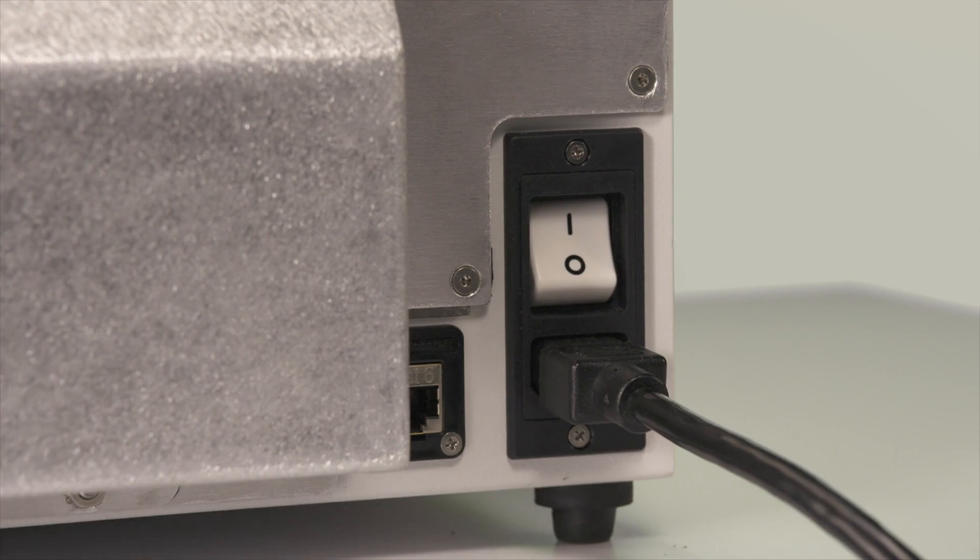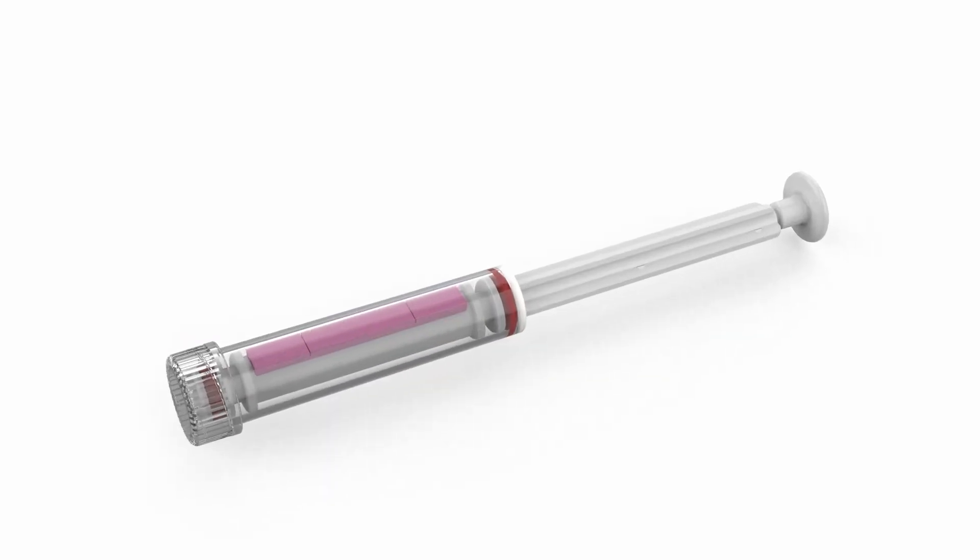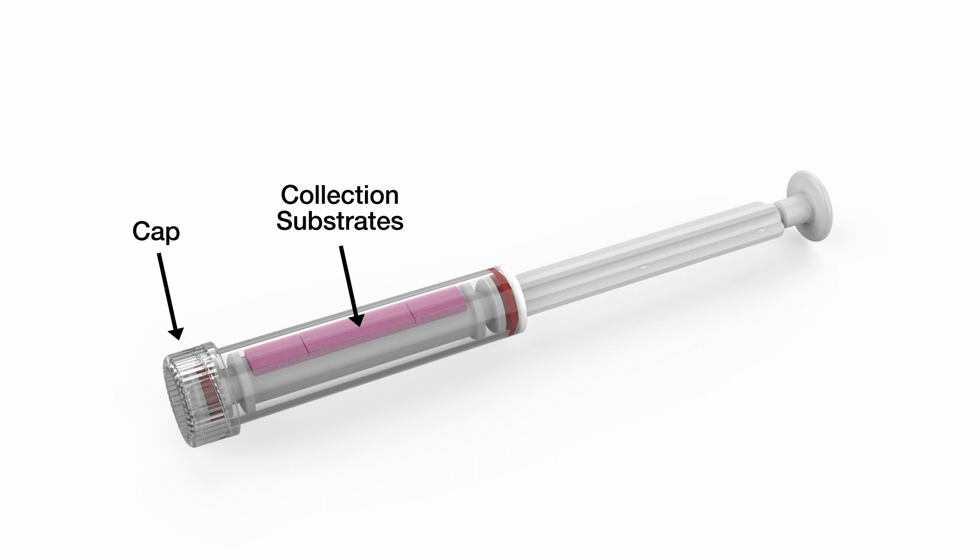Sampler is now ready for sample cartridge installation. The sample cartridge consists of a cap that twists on and off, a collection substrate isolated inside the sample cartridge, and a plunger.